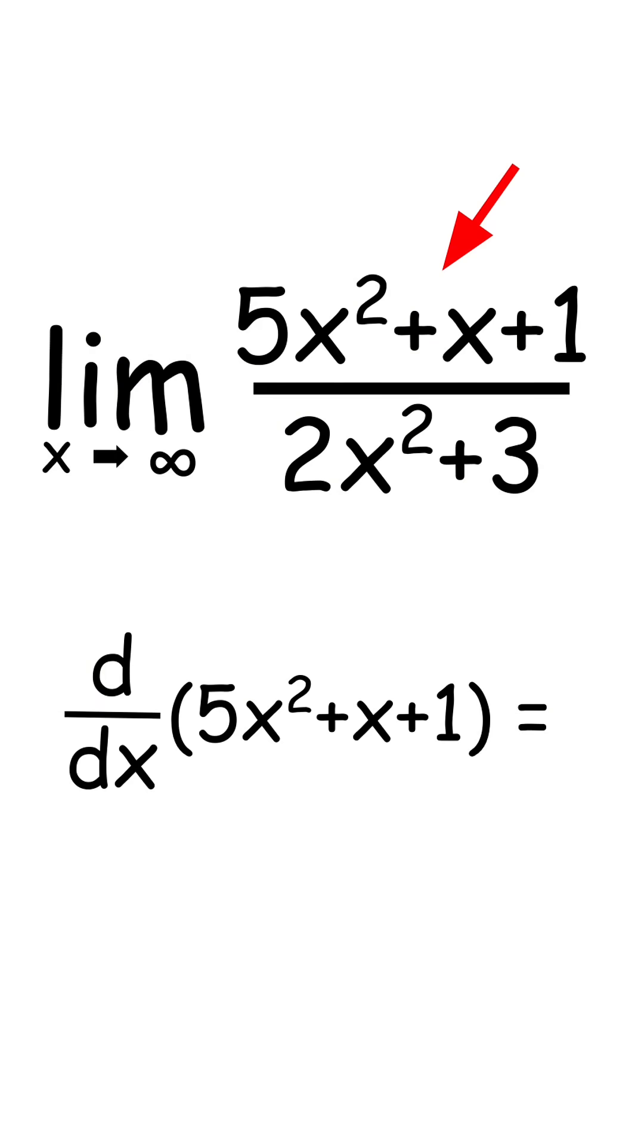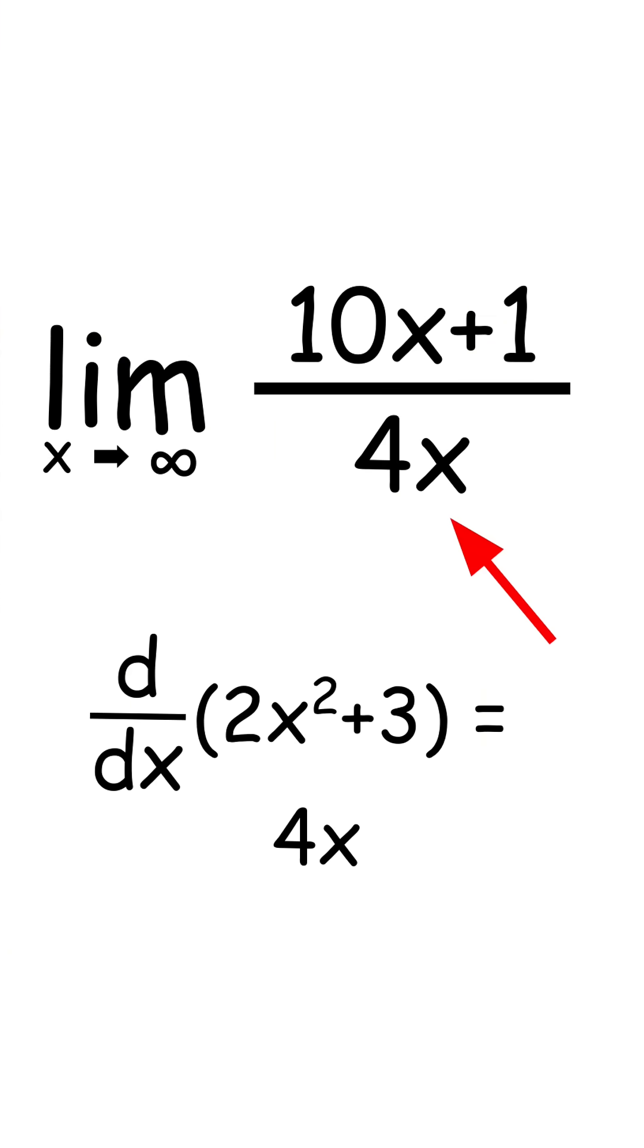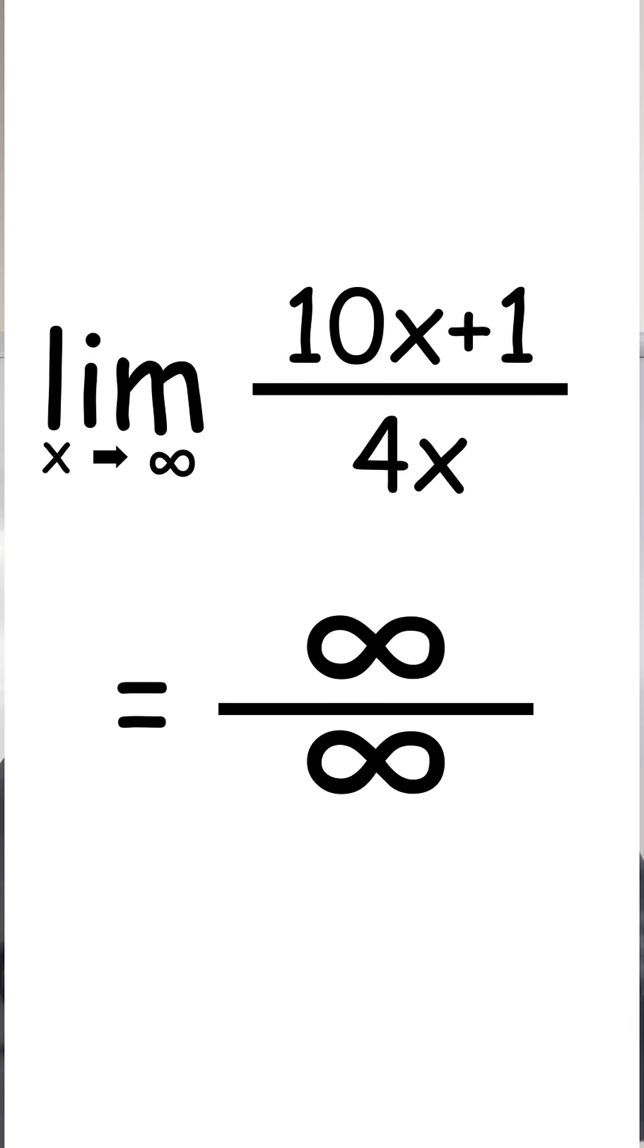Take the derivative of the top function and you get this, and take the derivative of the bottom function and you get this. Well, this still looks easier, but do we have to stop there? Well, if we do, we still get the same indeterminate form, infinity over infinity.